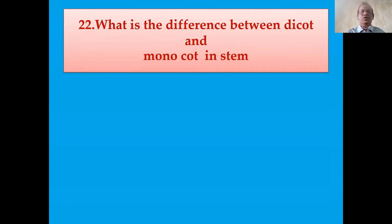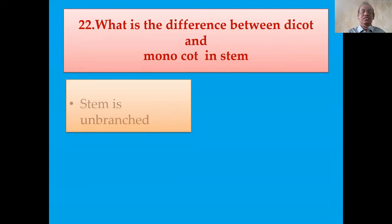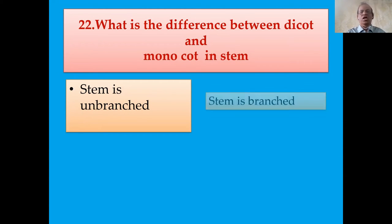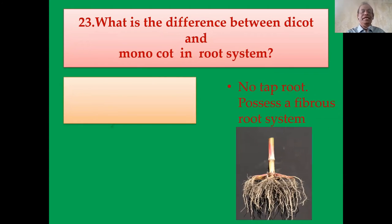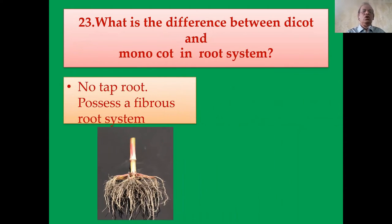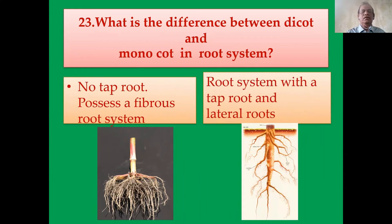What is the difference between dicot and monocot in stem and root system? Monocot stems are unbranched, while dicot stems are branched. For the root system: monocot plants possess fibrous root systems — no tap root — with five rows of roots. Examples include sugarcane, onion, grass, and paddy. Dicot plants have a tap root system with lateral roots as well. Example: mango tree.